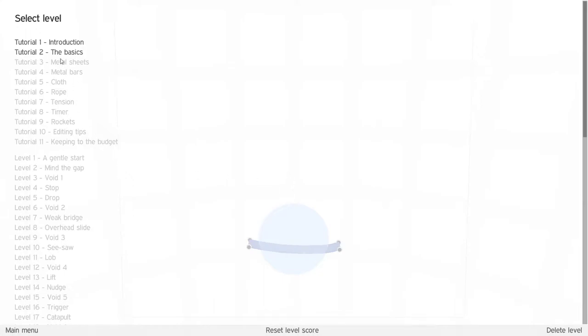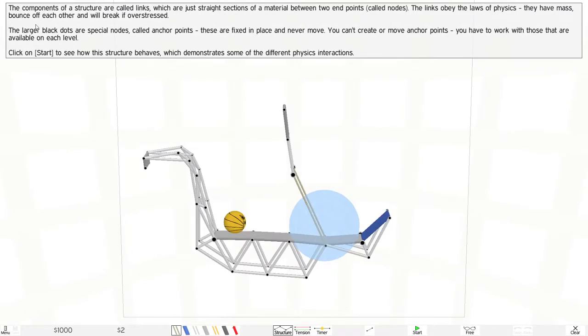Alright, it's time for the basics. The components of a structure are called links, which are just straight sections of material between two endpoints called nodes.